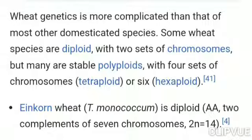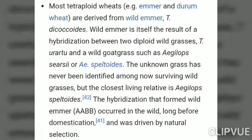Wheat genetics is more complicated than that of most domesticated species. Some wheat species are diploid with two sets of chromosomes, but many are stable polyploids — with four sets (tetraploid) or six sets (hexaploid). Einkorn wheat (Triticum monococcum) is a diploid species having two complements of seven chromosomes.